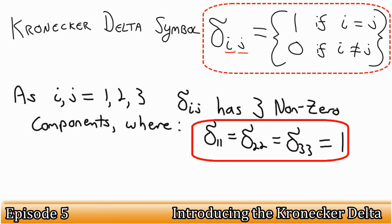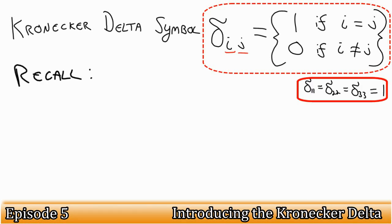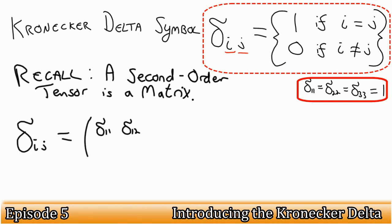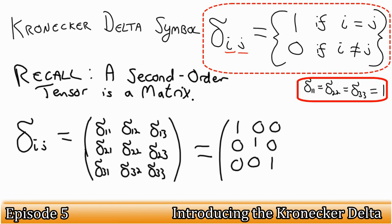So why is this useful? Well, let's recall back to episode 1, where we introduced what a tensor of a certain order was equivalent to. This is where that comes in useful. A second order tensor is equivalent to a matrix, and so the Kronecker Delta tensor is a 3x3 matrix, as we can see here.